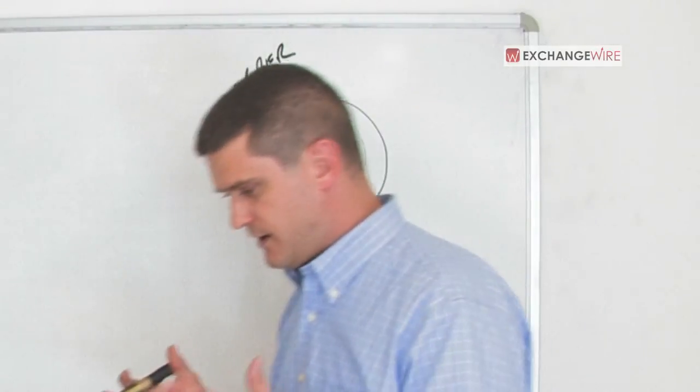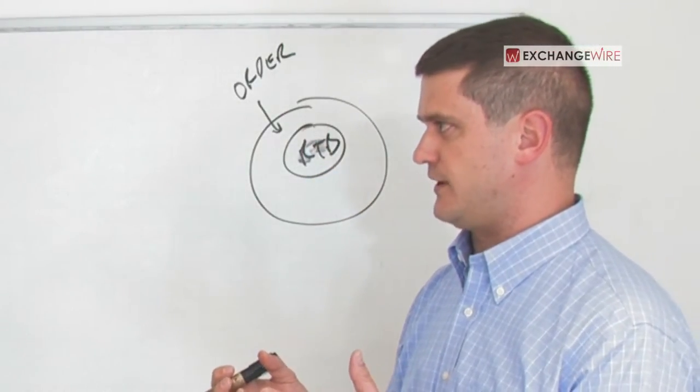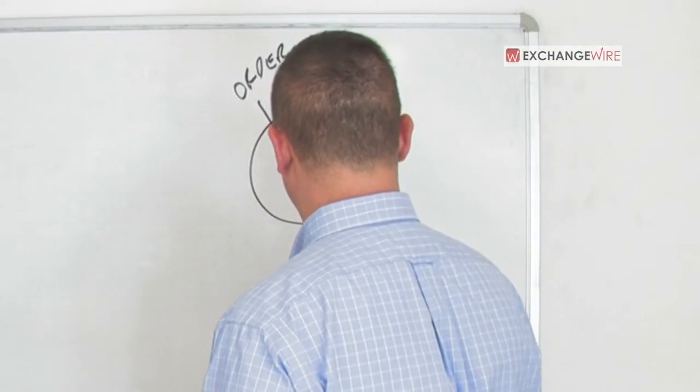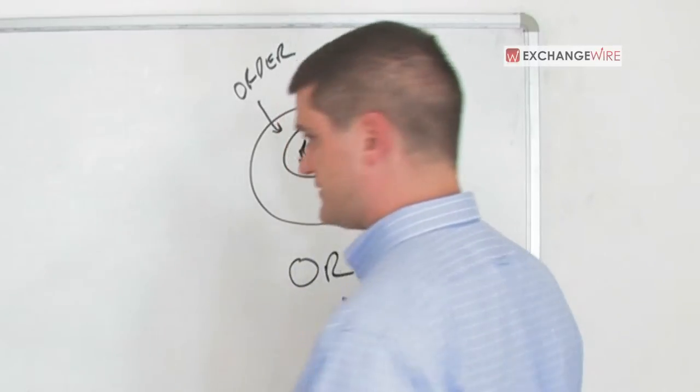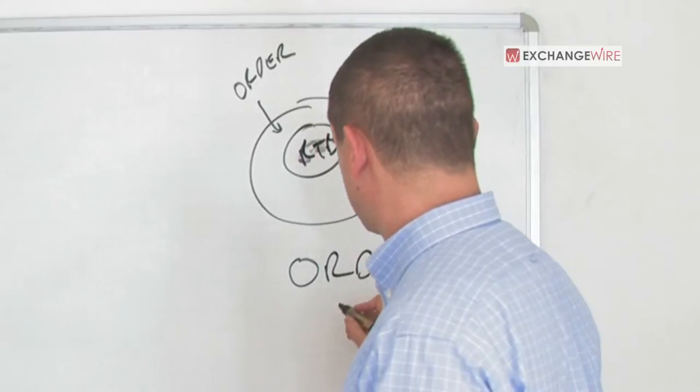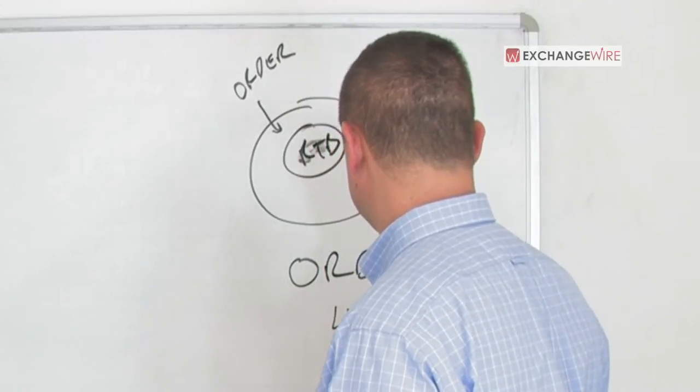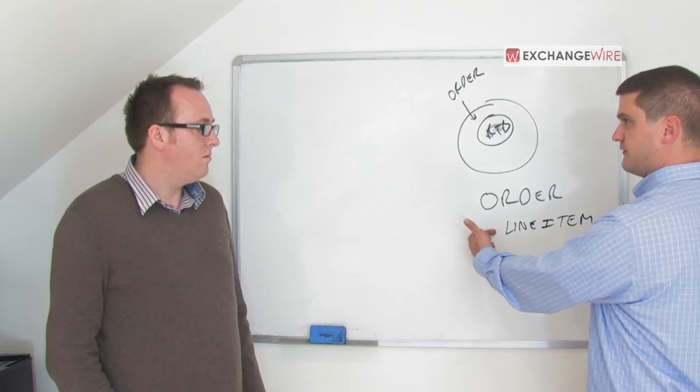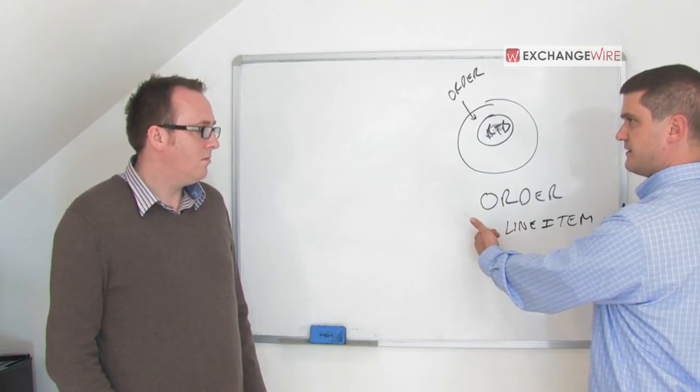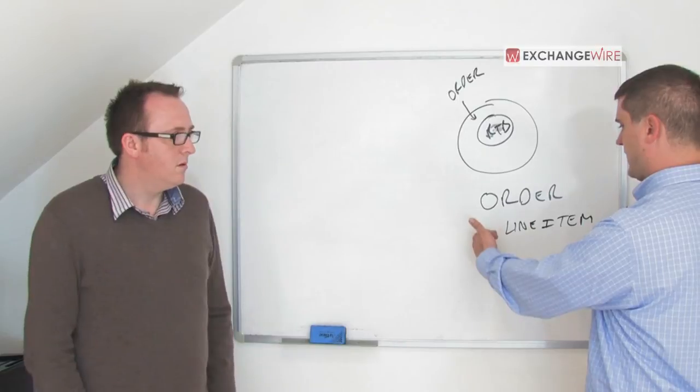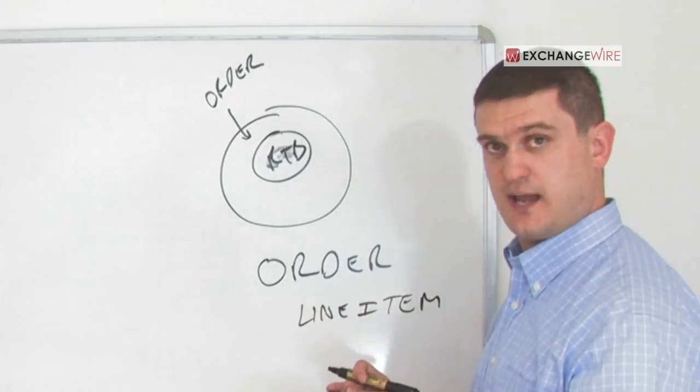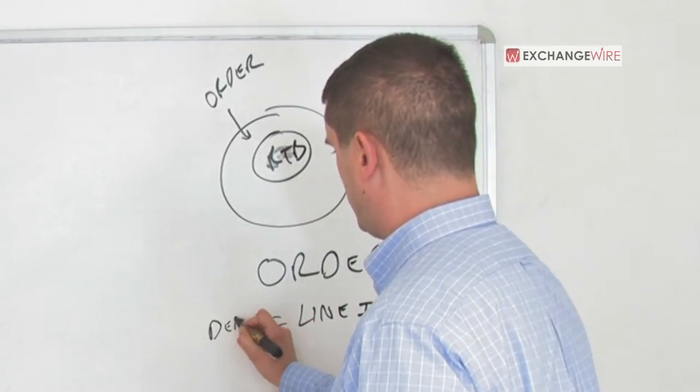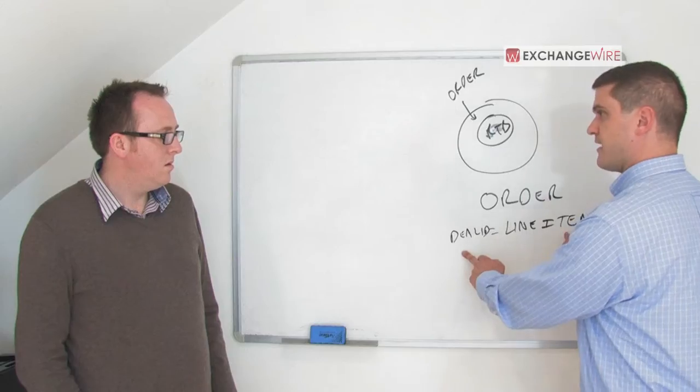What's actually happening is that there's an order which is trying to buy inventory and most orders are composed of an order which contains a lot of metadata, flight dates, those sort of things, and then a line item. And a line item is kind of the lowest granularity of unit, generically speaking, that contains an independent budget. Each line item may have independent budget from the others, an independent frequency cap, generally independent targeting.